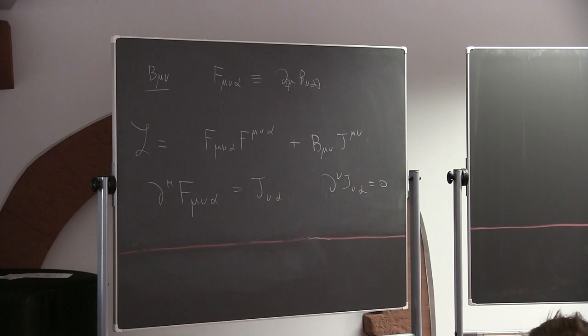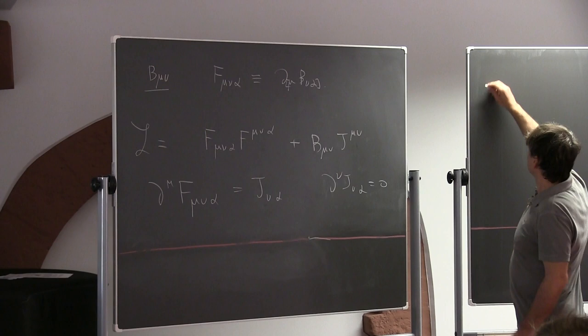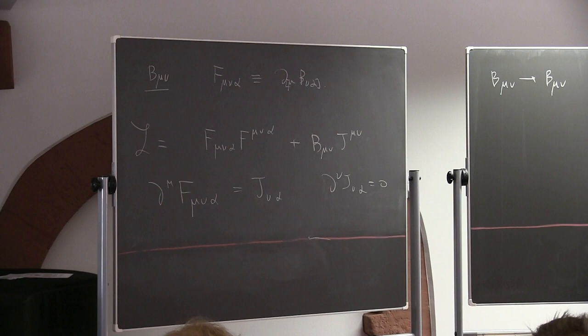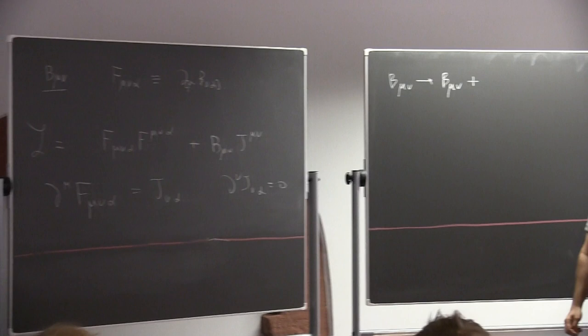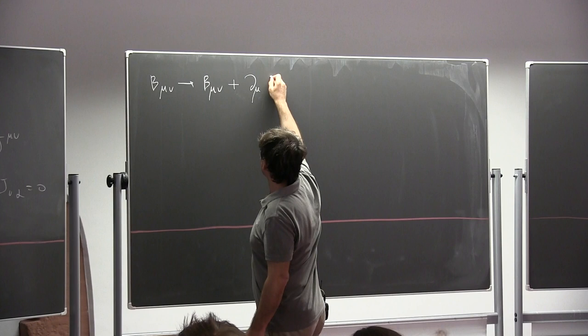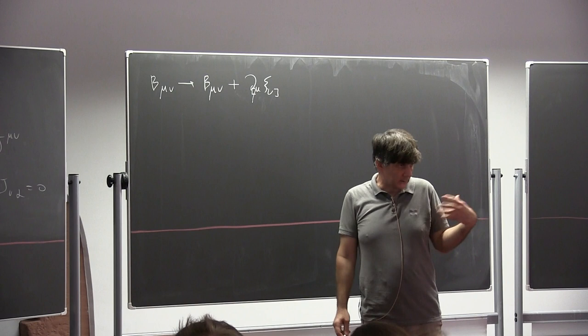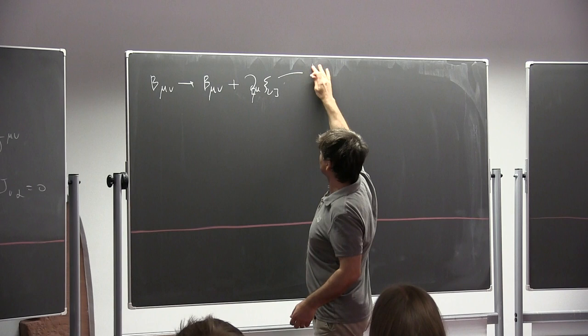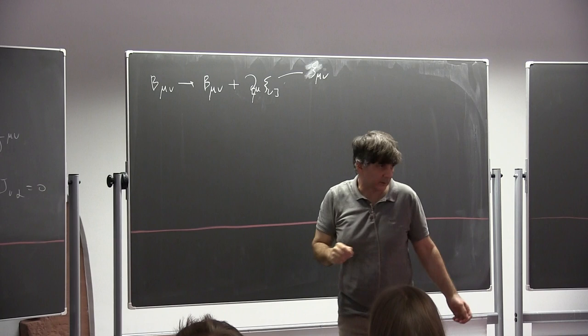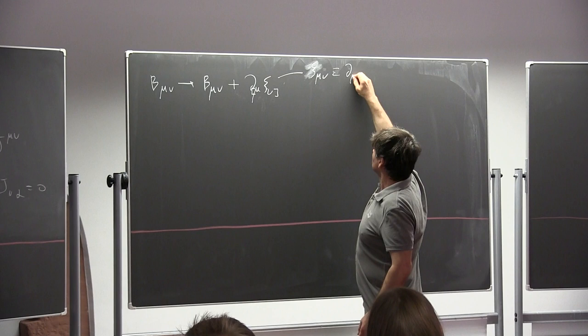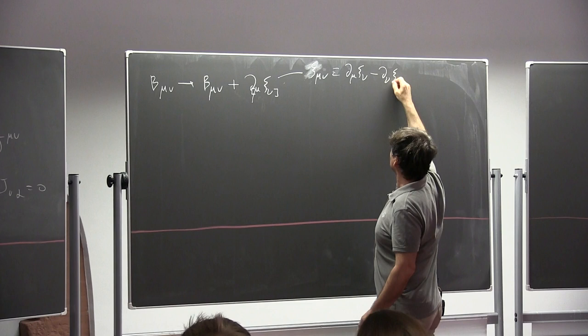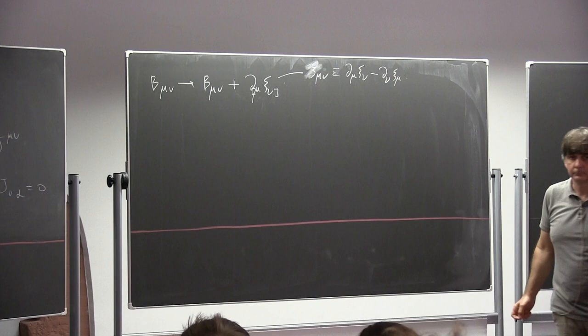This theory, just like Maxwell, exhibits gauge redundancy. We can shift B_μν by an anti-symmetrized derivative of a vector ξ_μ — a gauge transformation vector. If you think of ξ_μ as a vector, then this shift is nothing but the field strength for ξ, which I can denote ξ_μν, anti-symmetric. So ξ_μν is literally a Maxwell field strength but for the gauge parameter ξ. ξ is not a field — it's a gauge parameter.